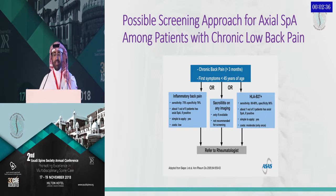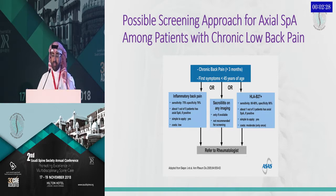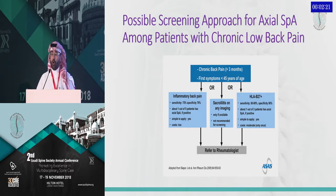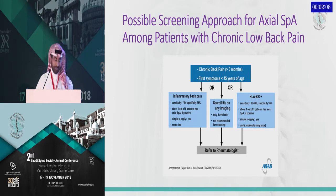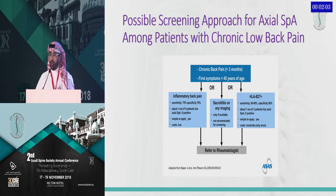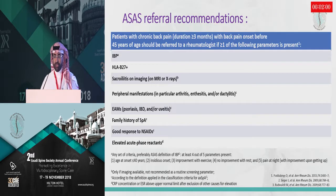Regarding the possible screening approach for axial spondyloarthritis among patients with chronic low back pain: in those with chronic back pain for more than three months whose first symptoms developed before age 40 to 45, the presence of inflammatory back pain, sacroiliitis on any imaging whether x-ray or MRI, or the presence of HLA-B27 would suggest that the patient should be referred to a rheumatologist for early diagnosis and effective treatment.